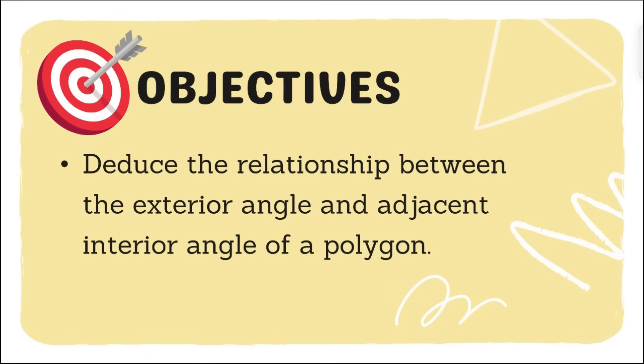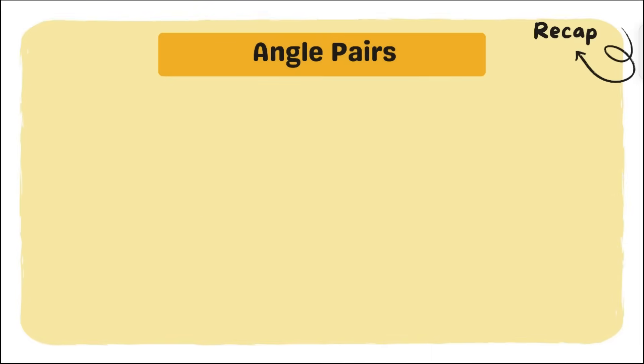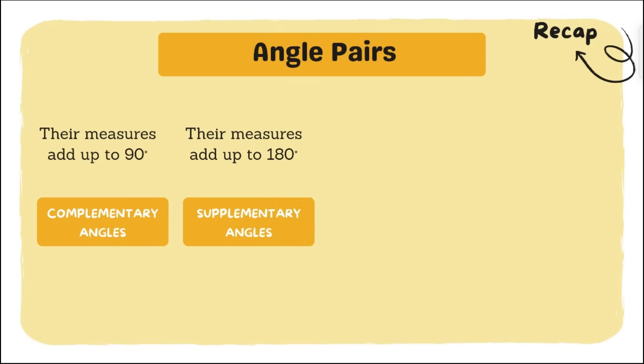So first let us have a review of angle pairs. The first one is angle pairs which measures add up to 90 degrees. These are the complementary angles. Next, how about angle pairs that measure add up to 180 degrees? Yes, they are the supplementary angles.